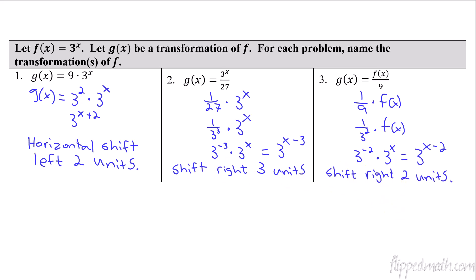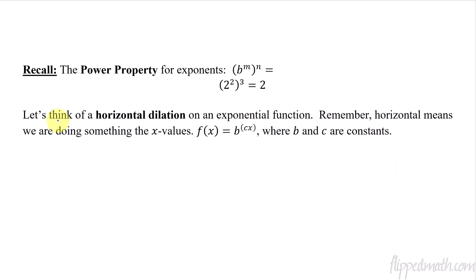Now let's try the next set of problems dealing with the power property. This is where you have something raised to a power and then that result is raised to another power. If you remember, you just multiply the exponents. So (b^m)^n = b^(m·n). For example, 2 squared to the third power: multiply the exponents to get 2 to the sixth. Pretty straightforward.